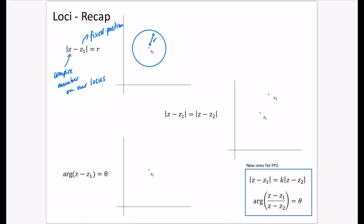The second locus |Z - Z1| = |Z - Z2| says that the distance between the locus and Z1 equals the distance between the locus and Z2. This gives a perpendicular bisector of the line segment joining Z1 and Z2. Anywhere along this line is equidistant from Z1 and Z2.